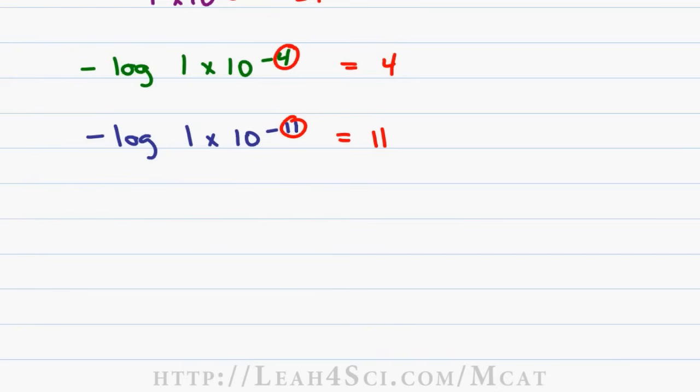Let's apply this to something you already know. A neutral solution at room temperature will have a pH at 7. This solution will also have an equivalent H plus and OH minus concentration, each equaling 1 times 10 to the minus 7. So let's prove this mathematically.